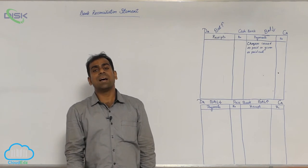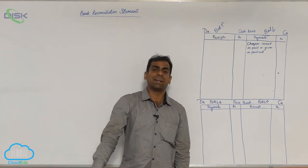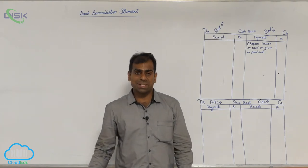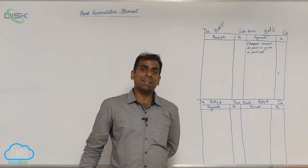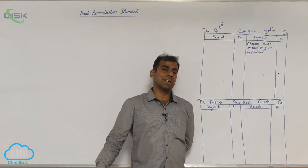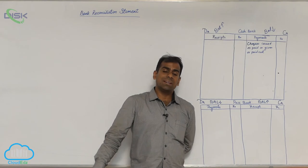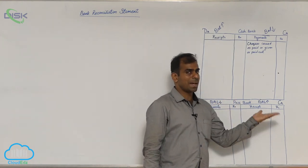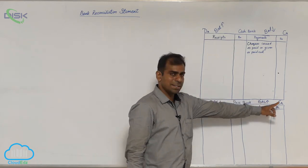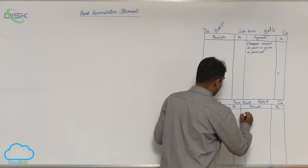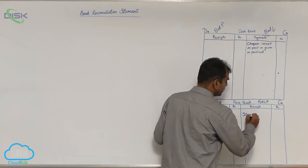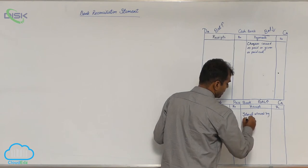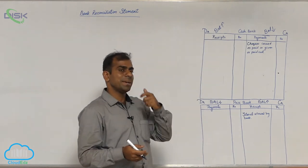The next item is interest allowed by bank. Whenever you have money in the bank, the bank gives you interest. It is the bank that calculates how much interest to give you, so the bank is the initiator of the transaction and the entry is first made in the pass book. When the bank gives you interest, your bank balance increases, so we enter it on the receipt side or credit side of the pass book. This similarly applies to interest on investments.